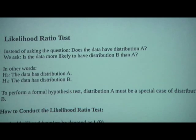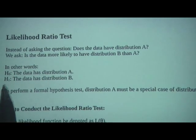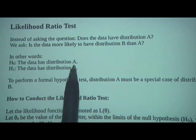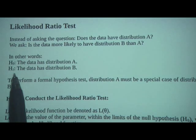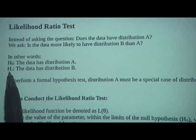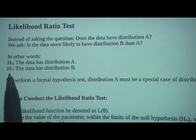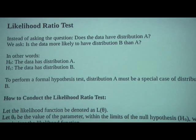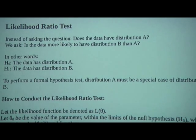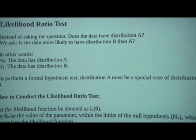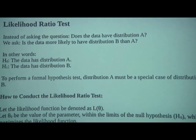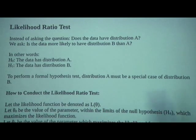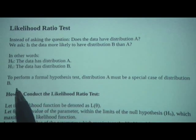So in other words, our null hypothesis H-naught is that the data has distribution A, and our alternative H-sub-1 is that the data has distribution B. To actually perform a formal hypothesis test under the likelihood ratio test, distribution A must be a special case of distribution B.